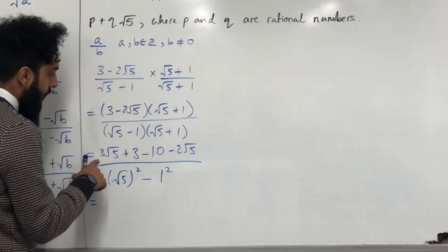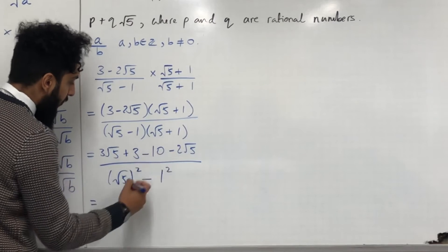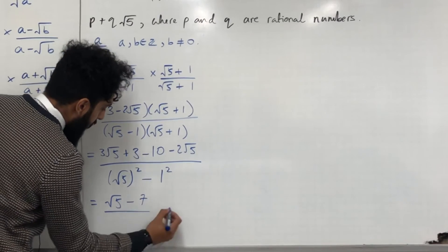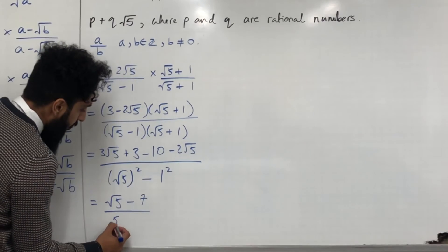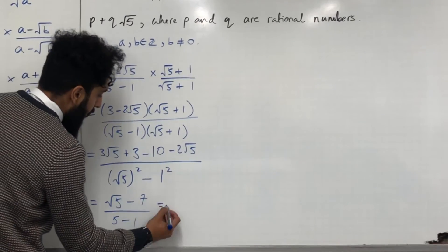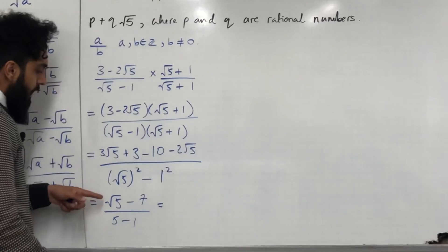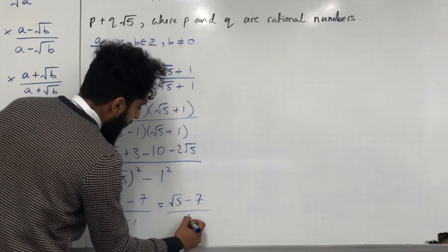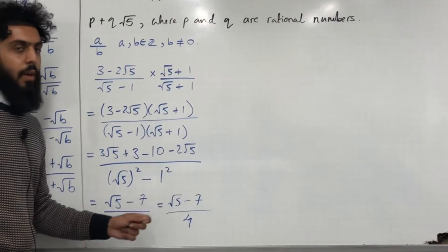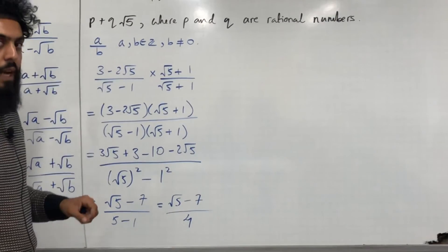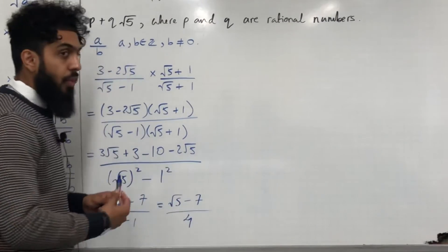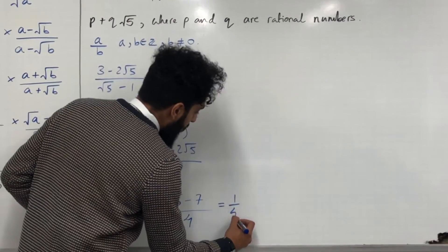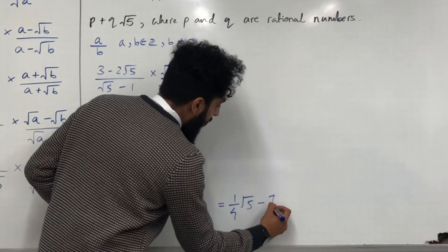Simplifying: 3√5 − 2√5 = √5, and 3 − 10 = −7. The denominator is 5 − 1 = 4. So we have (√5 − 7) over 4. This is not the final answer — we need to write it in the form p + q√5, so we split into two parts: (1/4)√5 − 7/4.